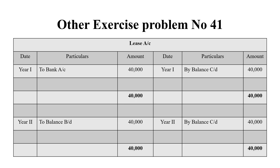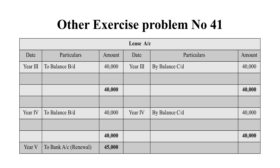The next account is the lease account. For the lease account, we paid 40,000 rupees, so 40,000 has gone out. In the fourth year, 40,000 rupees is recorded. And for the fifth year, the bank account shows 45,000 rupees. So we will pay 45,000 rupees — that is the balance.